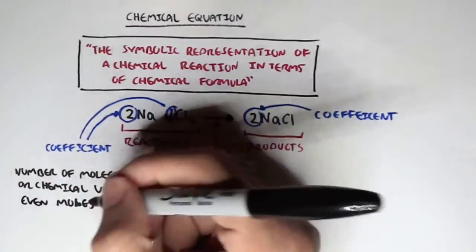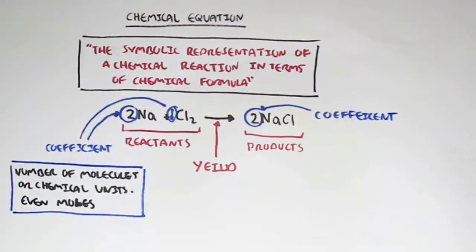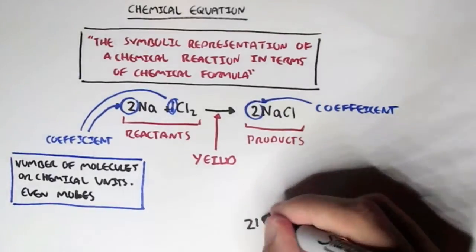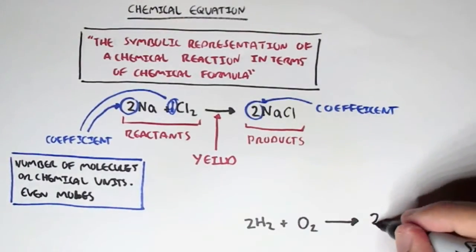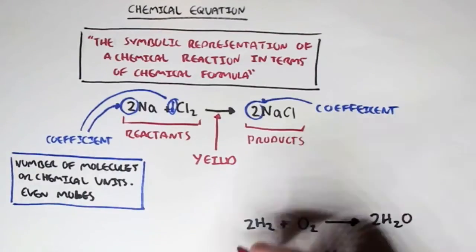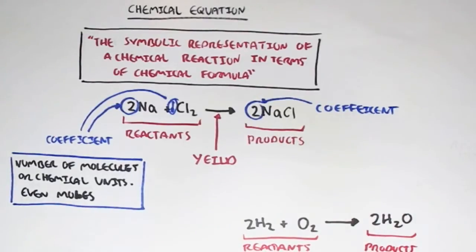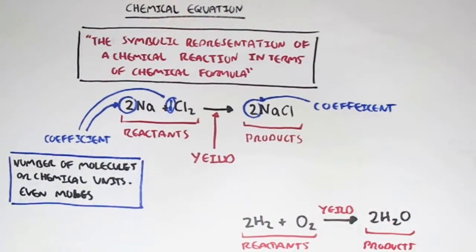It can even be moles. For example, we have two moles of sodium and one mole of chloride gas. Let's look at another chemical reaction. Here we have two hydrogen gases plus oxygen gas, which will yield two H2O's — two molecules of water. The elements on the left are the reactants, and on the right they're the products, and the arrow represents the yield.